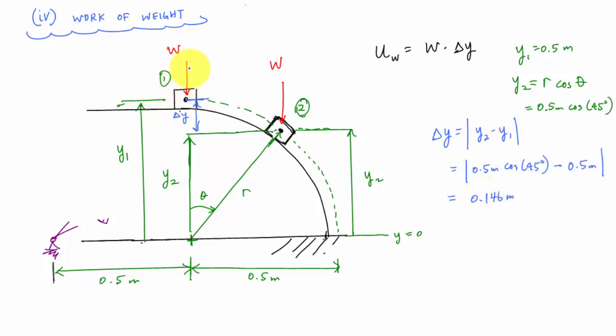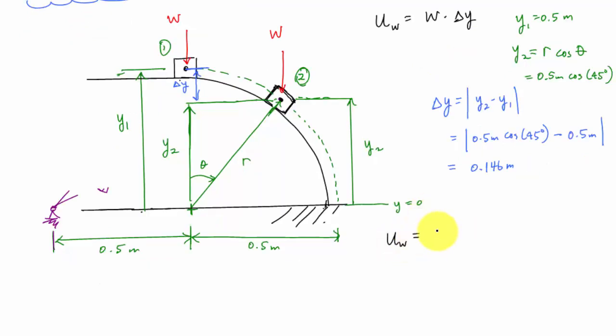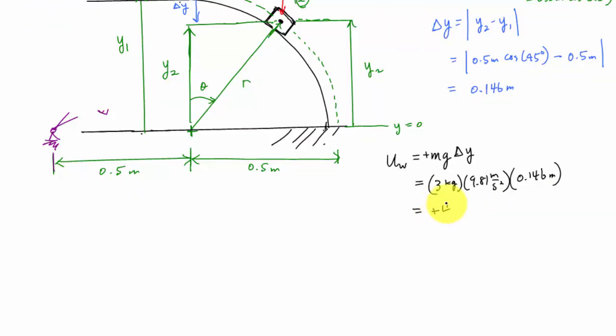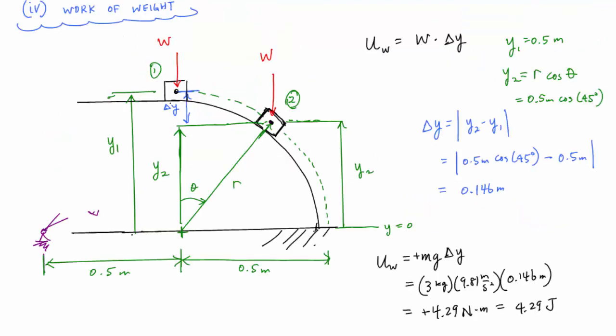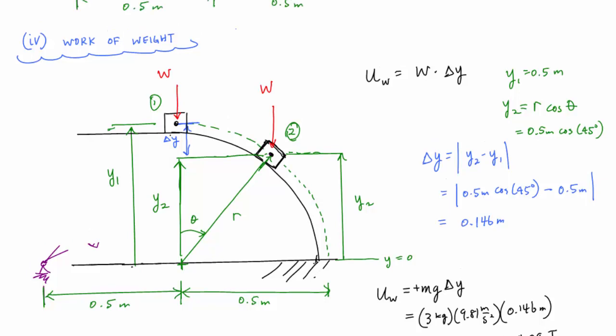The direction of my force is in the direction of motion downwards. This is considered positive work. And so uw, the work due to weight, is equal to the mass times gravity times delta y is positive 4.29 newton meters, or if you want 4.29 joules. So next, we're going to determine the work by this force of the spring.